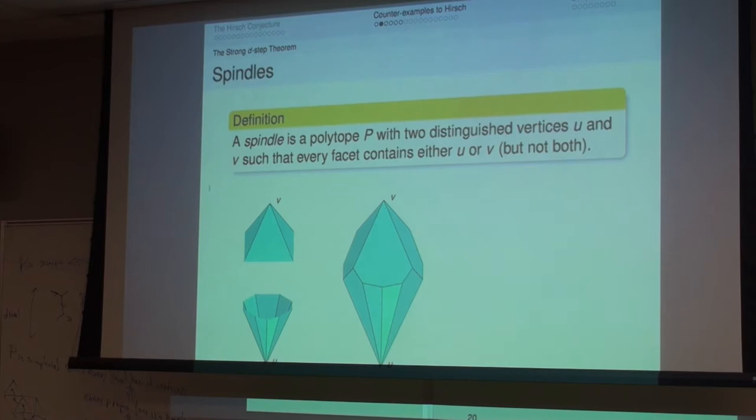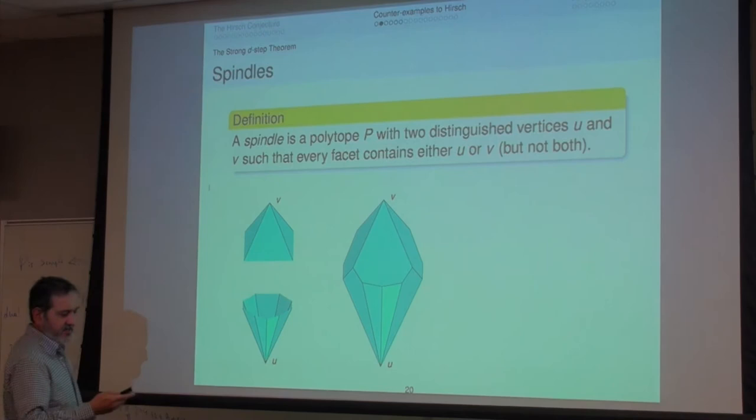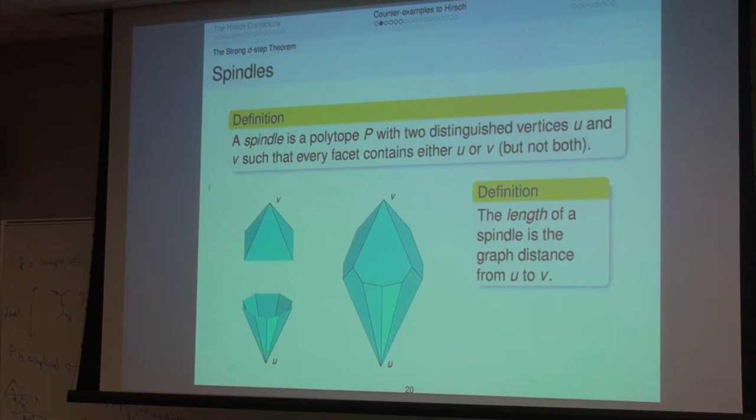A spindle is a polytope with two special vertices that contain all the facets — it's the intersection of two cones from two vertices. I'm not interested in the distance between any pair of vertices; I'm particularly interested in the distance between these two special vertices, which I call the length of the spindle.